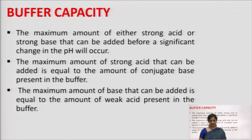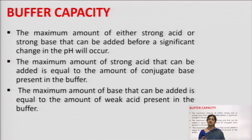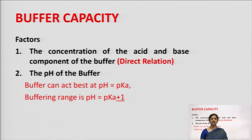Buffer capacity is the maximum amount of either strong acid or strong base that can be added before a significant change in pH occurs. The maximum amount of strong acid that can be added equals the amount of conjugate base present. The maximum amount of base that can be added equals the amount of weak acid present. Buffer capacity depends on the concentration of the acid and base components — a direct relationship.